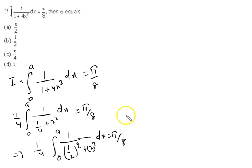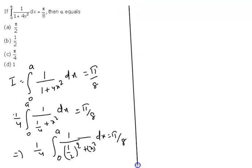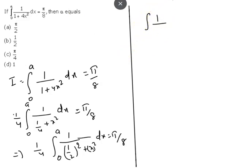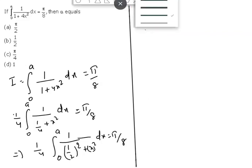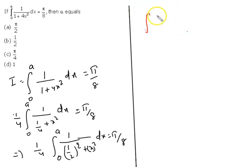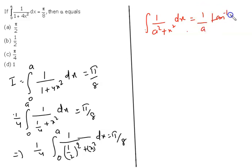Now I am going to discuss the special formula for integration. We know that if we have a question in the form of 1/(a² + x²) dx, we can directly integrate it. After integrating, we get (1/a) tan⁻¹(x/a).